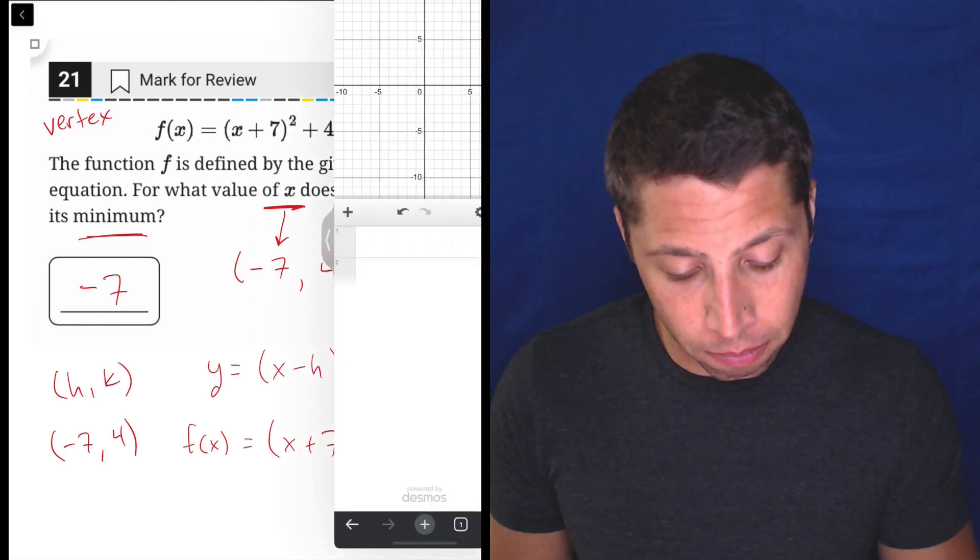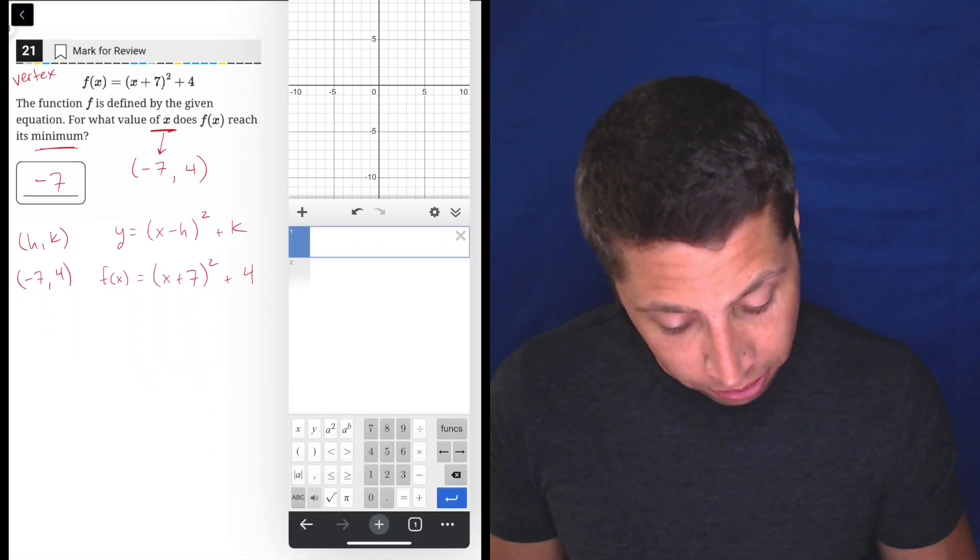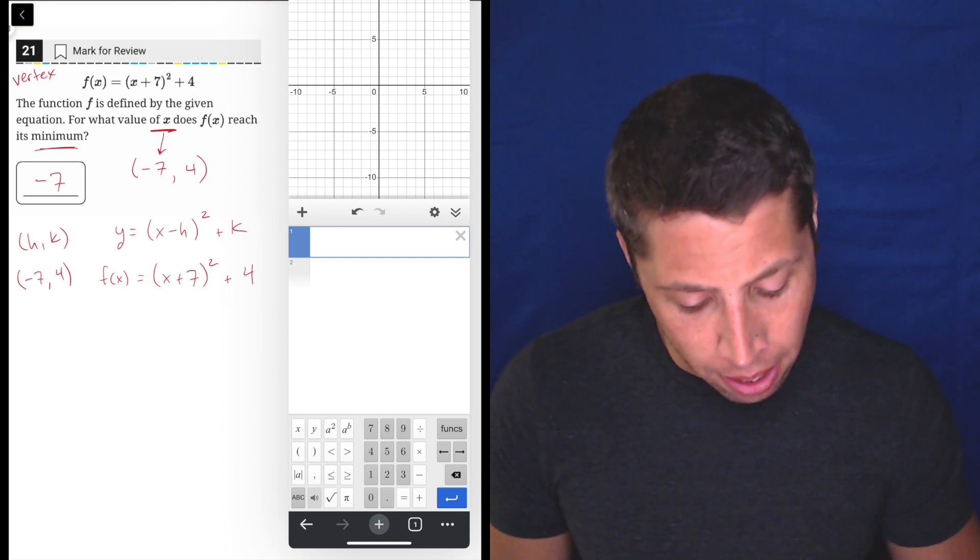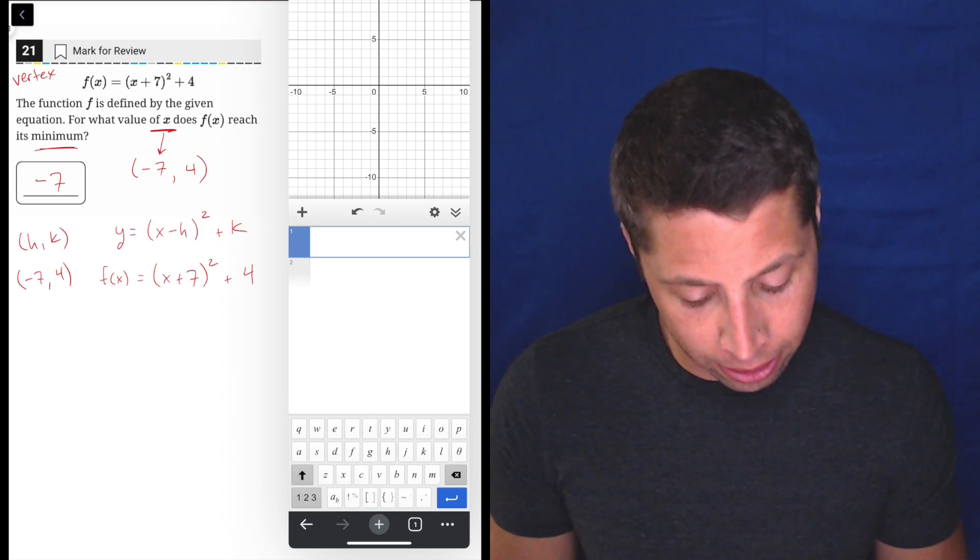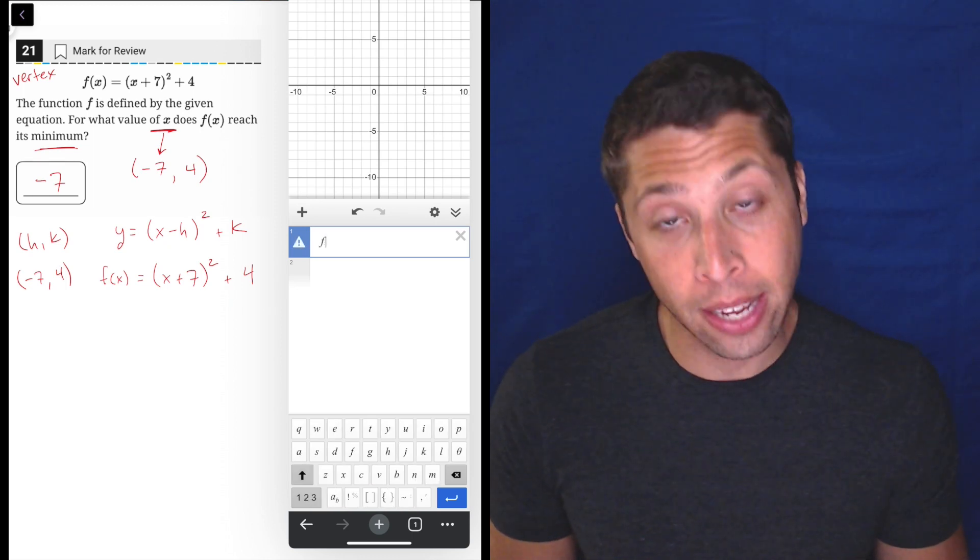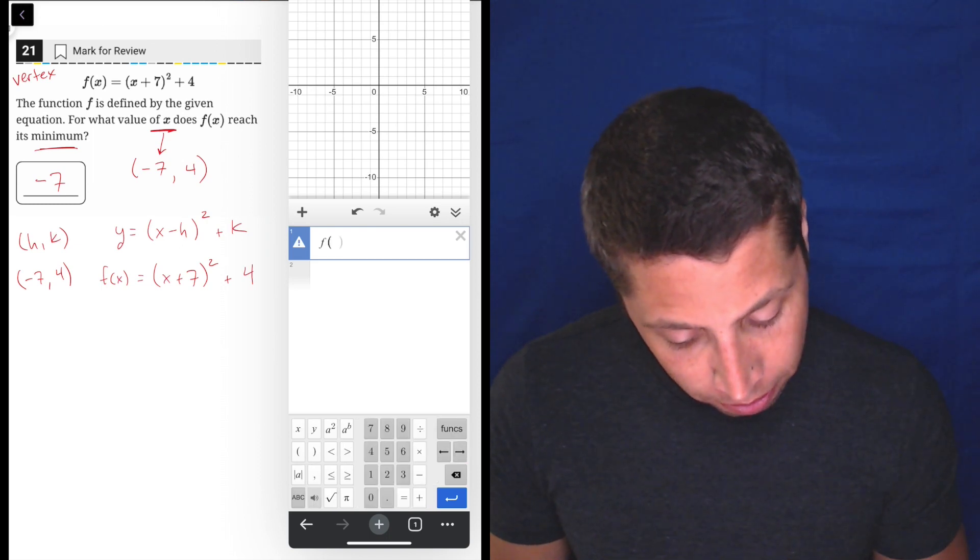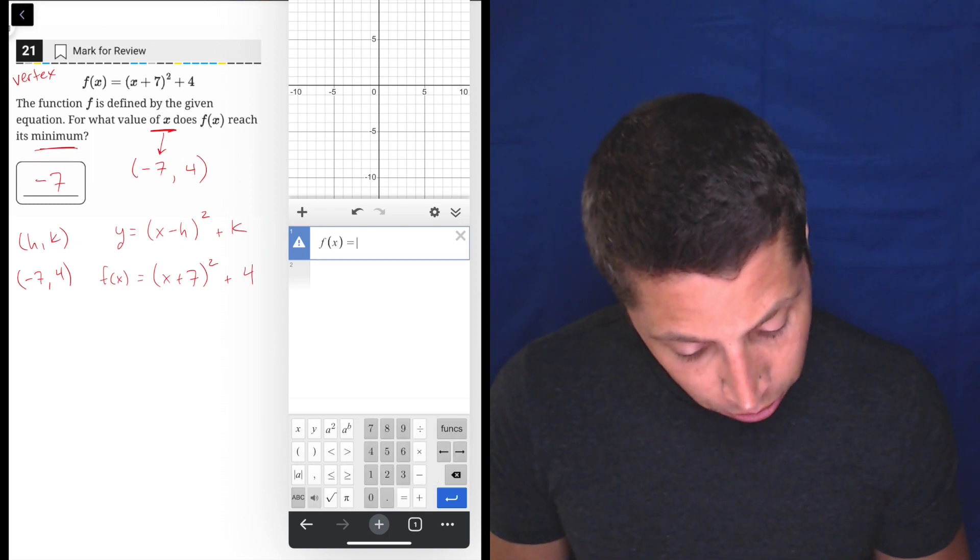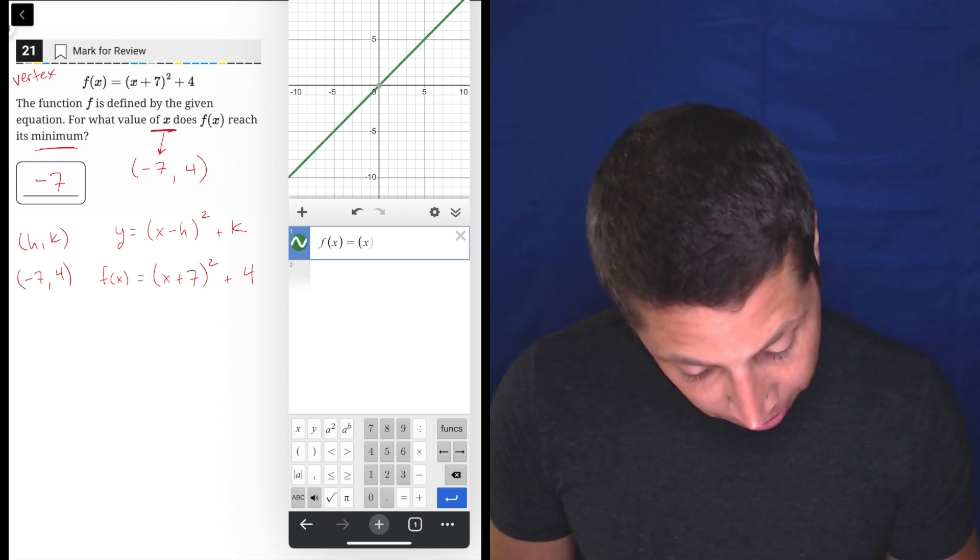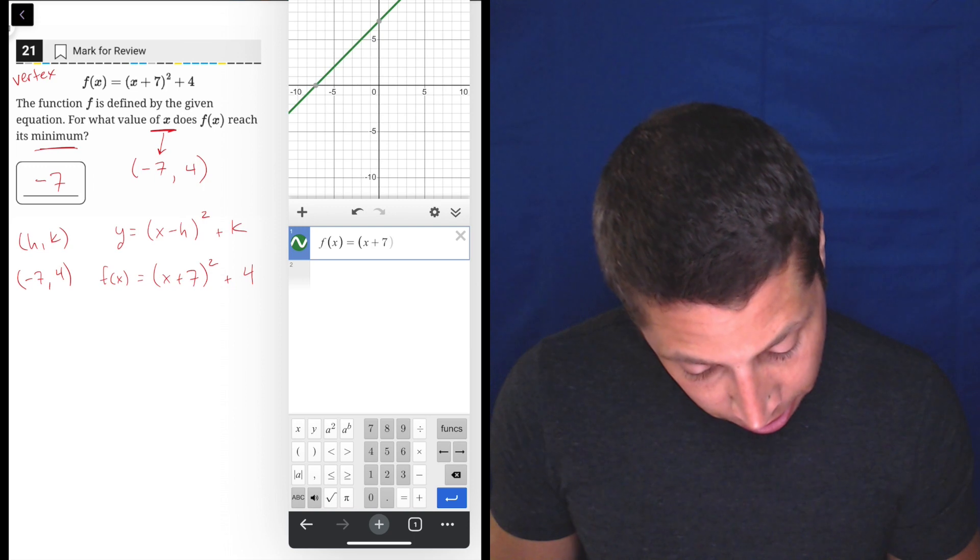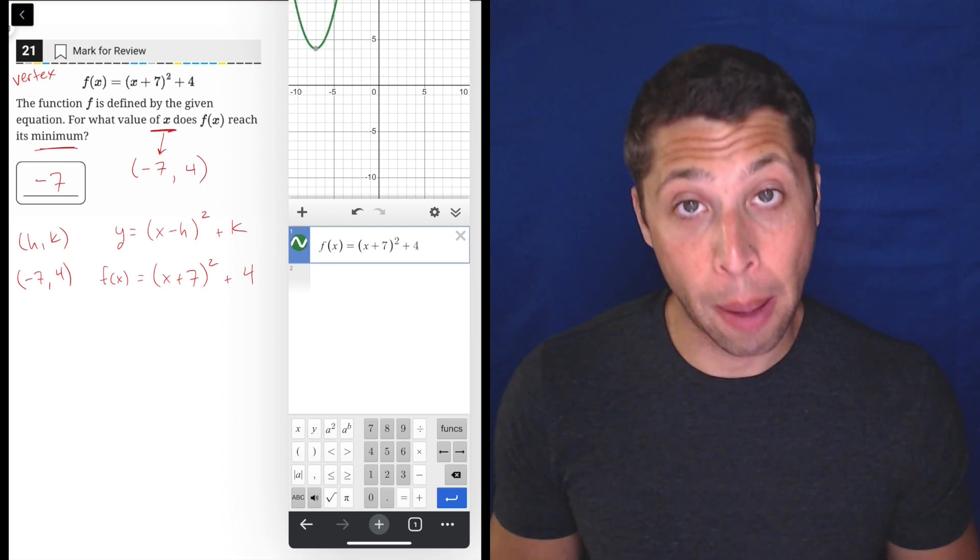But we can also do some graphing to understand this in a different way. So let me put this in here. We could change f(x) to y. But in case you are worried about doing that, we also have this ABC button on the bottom left that lets us add in the letter f, and then we can just do it as written. So f(x) equals, parentheses, x plus seven, close parentheses, squared, plus four.